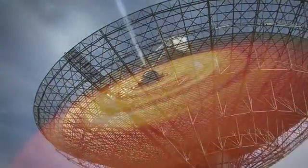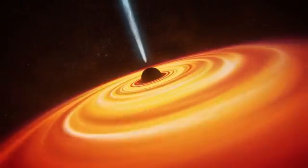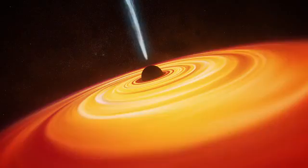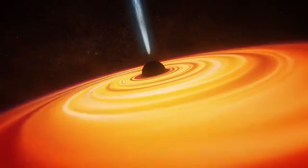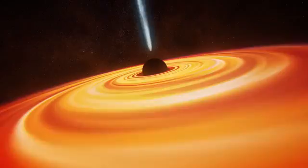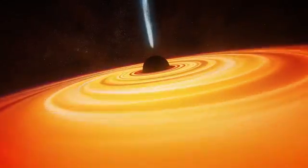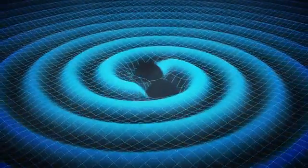Every galaxy contains a black hole at its centre. Some black holes weigh up to 10 billion times the mass of our Sun. When galaxies collide, their black holes sink to the centre of the remaining collection of stars and begin to orbit each other.